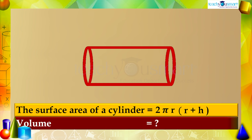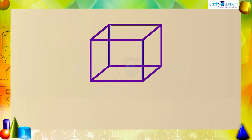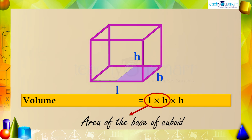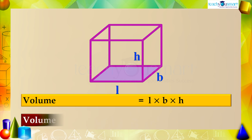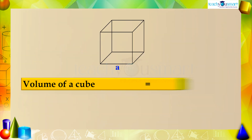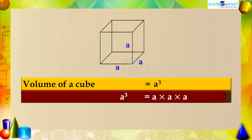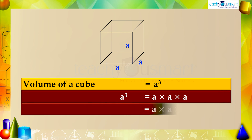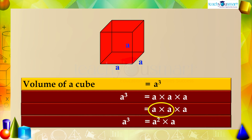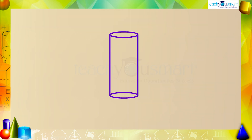Now let us look at the volume. We know that the volume of a cuboid is l multiplied by b multiplied by h. Note that l multiplied by b is the area of the base of the cuboid, so the volume of a cuboid is the product of base area and height. We also have the volume of a cube of edge a: a cube equals a multiplied by a multiplied by a. Here also we can see that the volume of a cube is the product of the base area (a × a) and height a, that is a³ = a² × a.